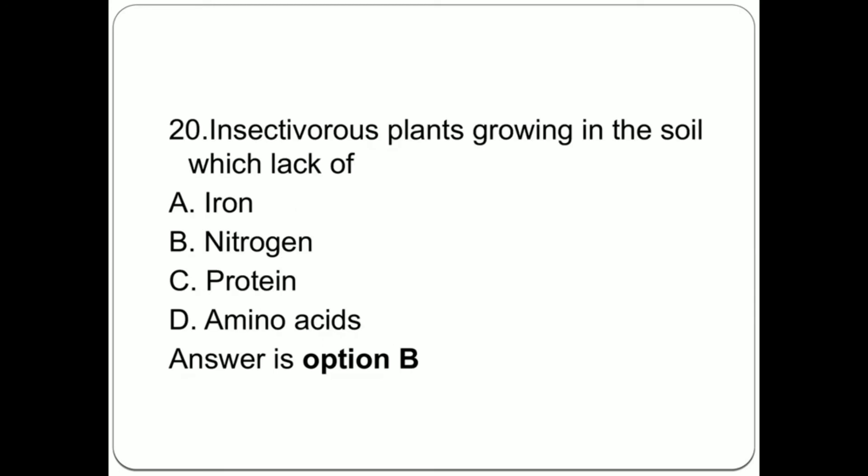Question 20: Insectivorous plants growing in the soil which lack of: A. Iron, B. Nitrogen, C. Protein, D. Amino acids. Answer is option B, Nitrogen.